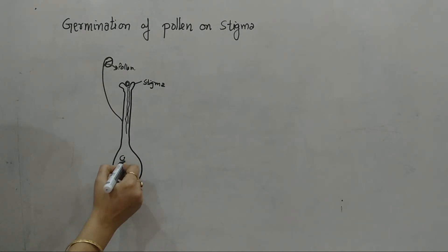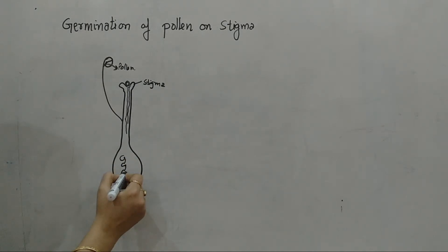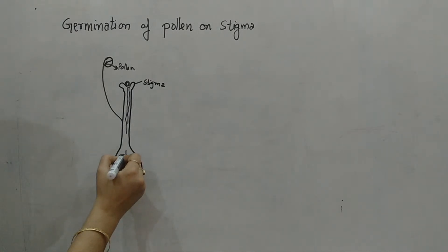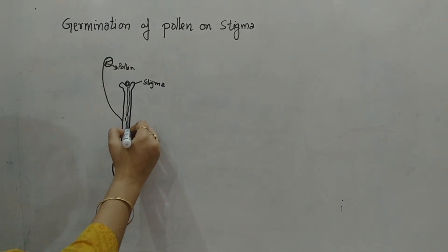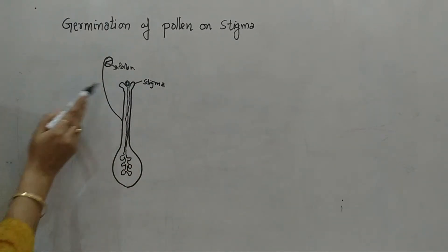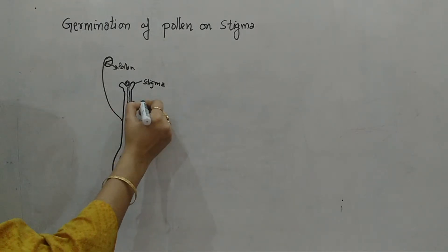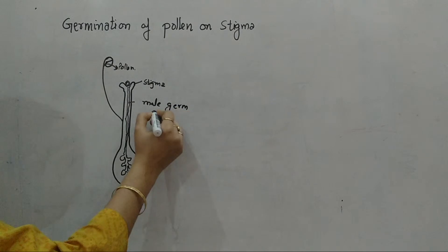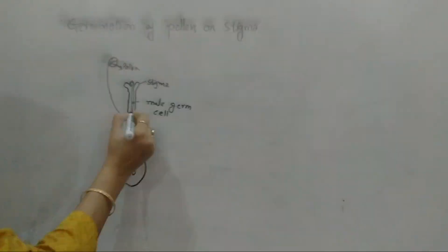Inside the ovary there are many ovules. I am making a rough diagram here. The pollen grain releases male germ cells which travel through the pollen tube and reach the ovule, where fertilization of the ovule takes place.